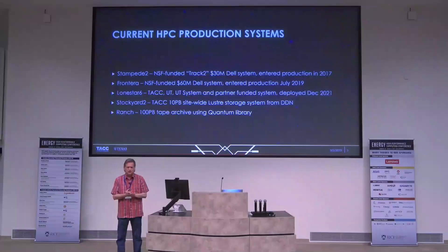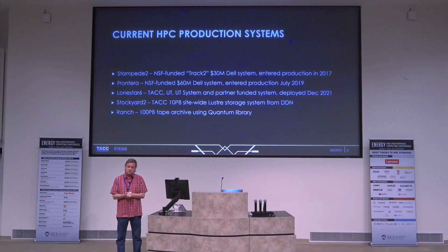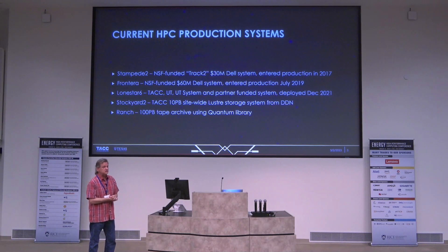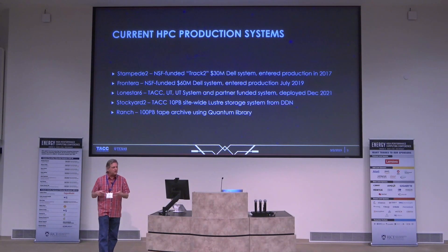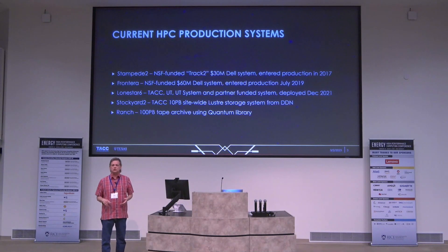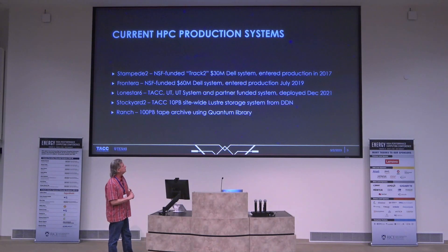We have written a proposal to replace Stampede 2 and hope to do so later this year should funding become available, but they're not doing 30 million dollar systems anymore — it's only going to be about 10 million dollars. Frontera is our big flagship system, now in its third year of production and about to go into a fourth year this summer. It's over 8,000 nodes and a real workhorse, and also where we do a lot of our evaluations for future technology comparisons.